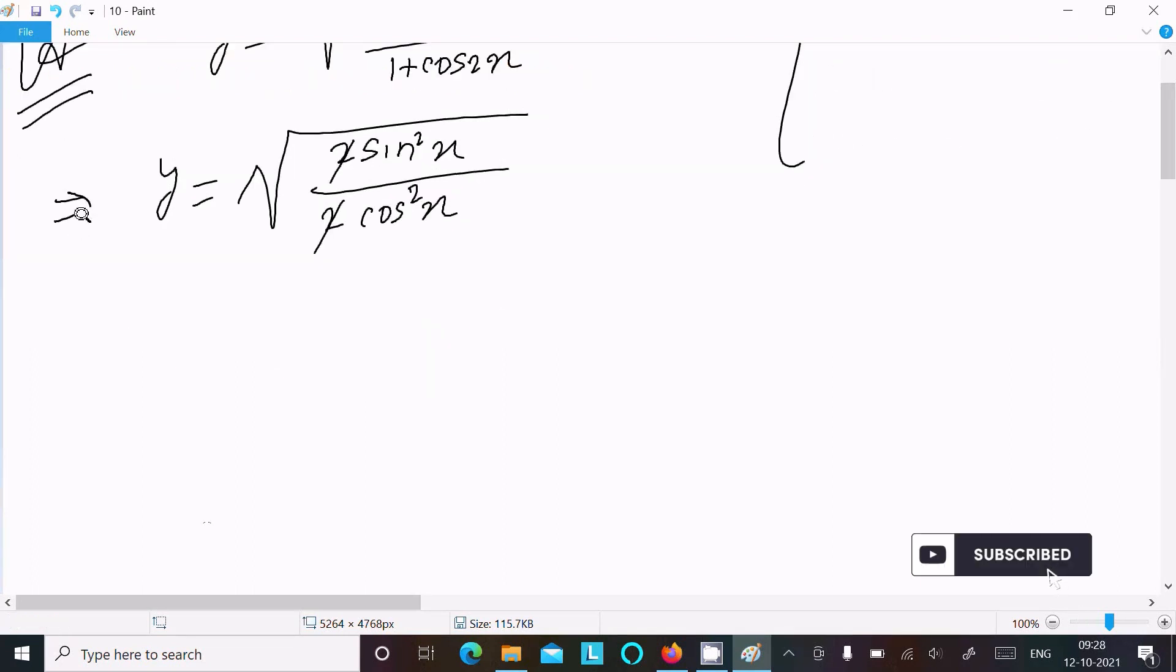This square cancels the root. Now you can get here y equals sin x by cos x whole square. So this square cancel the root, now you can get here y equals sin x by cos x.